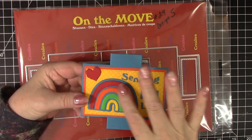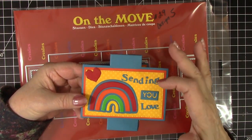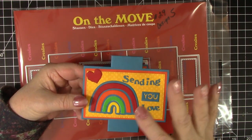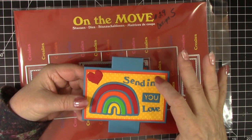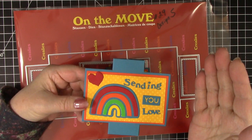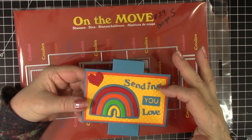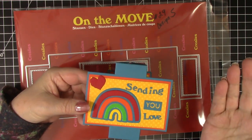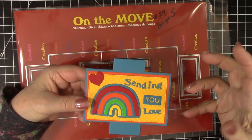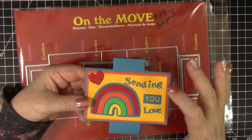I added a rainbow created with another new die in this release. I wanted to say Sending You Love, and I had the You and the Love dies from Crealey's, but I did not have Sending and my alphabet dies are way too big. So what I did is I just cut up many of their word dies and created Sending. So if you want a certain word and you don't have it, look at your other sentiment dies and maybe you can create it.